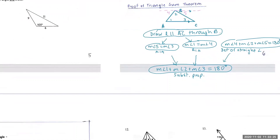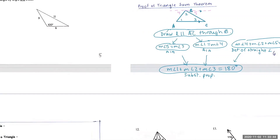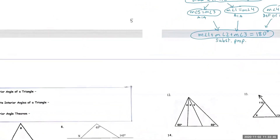We're going to move on to the next page. The theorems — you guys don't have to remember the theorems by name, you just have to be able to apply it. What I mean by that is if you see a triangle and you have two angles, you should be able to find the third angle by subtracting the sum of the other two angles from 180 degrees.